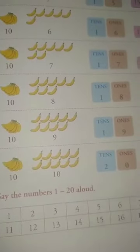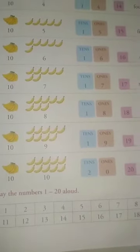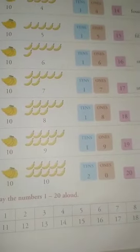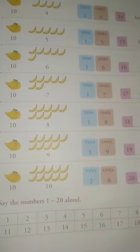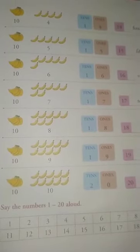Now say the numbers 1 to 20 aloud yourself and send the audio clip to me: 1, 2, 3, 4, 5, 6, 7, 8, 9, 10, 11, 12, 13, 14, 15, 16, 17, 18, 19, 20. You say the numbers 1 to 20 aloud and send the audio clip on my number — you can send it in the group.